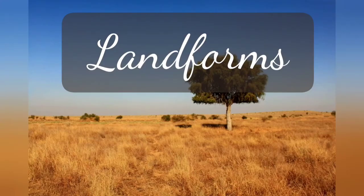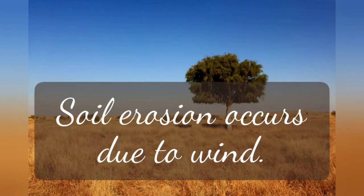Now let us see the landforms. As we know, the land here is quite dry and receives very little rainfall. What happens here is that soil erosion due to wind occurs. We have studied about soil erosion — here through the wind, soil erosion also happens, due to which sand dunes are formed.